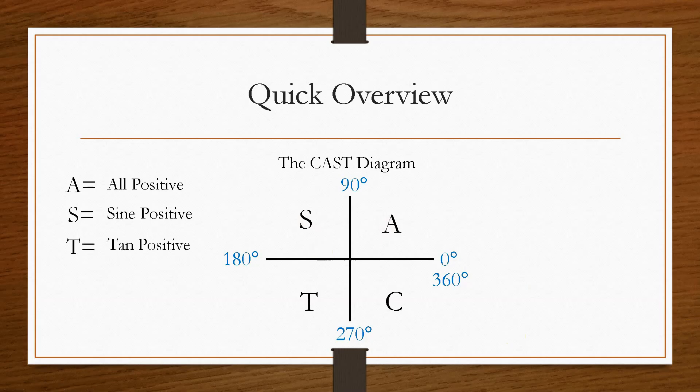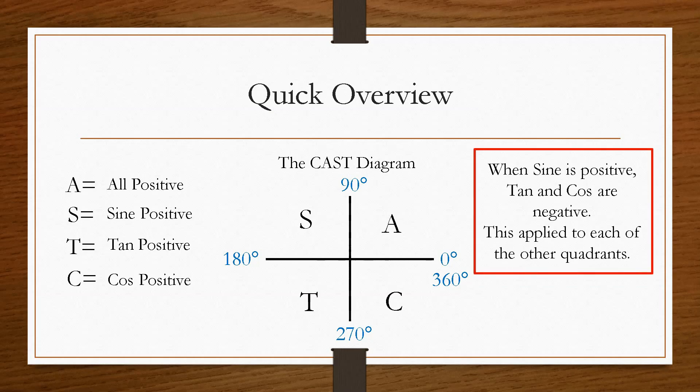In the T section, I'm sure you've guessed that tan is positive, and sine and cos are negative. And then the C section, the cos is positive, and the sine and the tan are both negative. And that's really what we just highlight here, that when sine is positive, in this section here, tan and cos are negative. And this applies again to the other two quadrants. A is all three of them are positive.